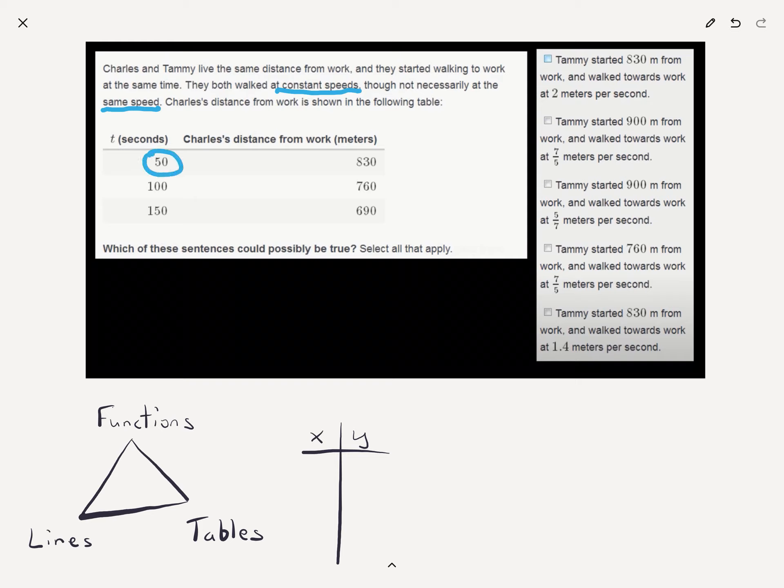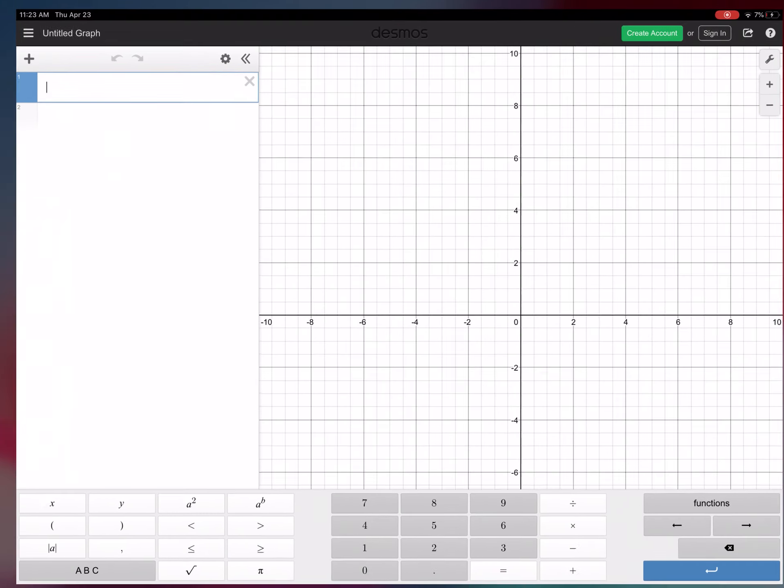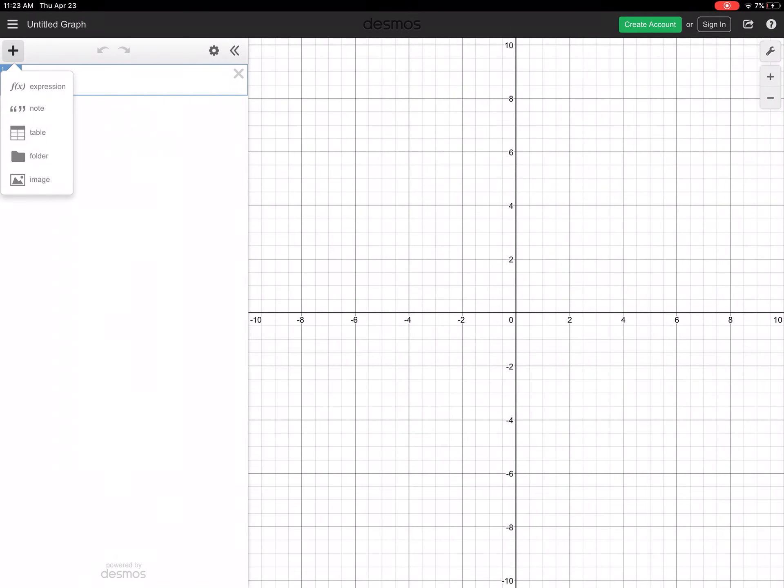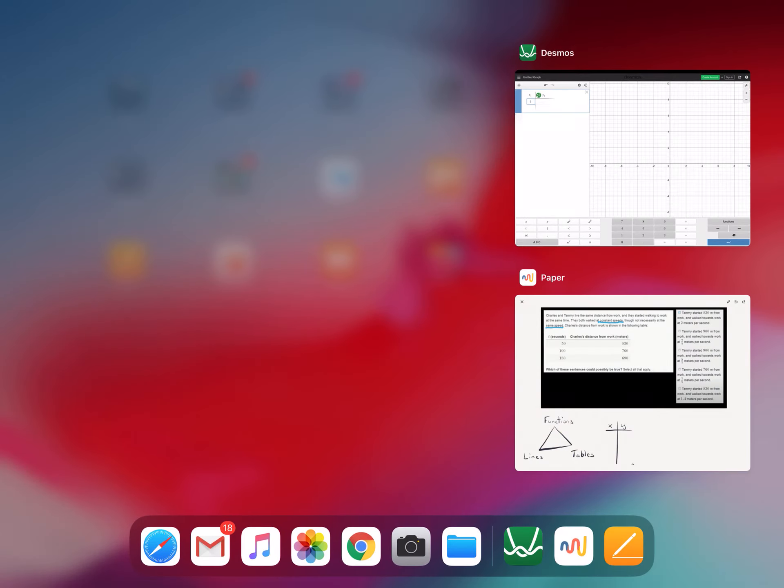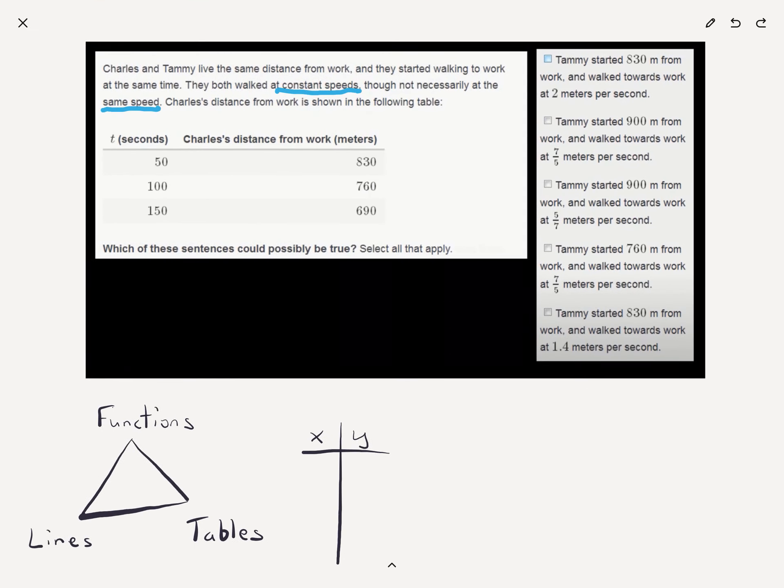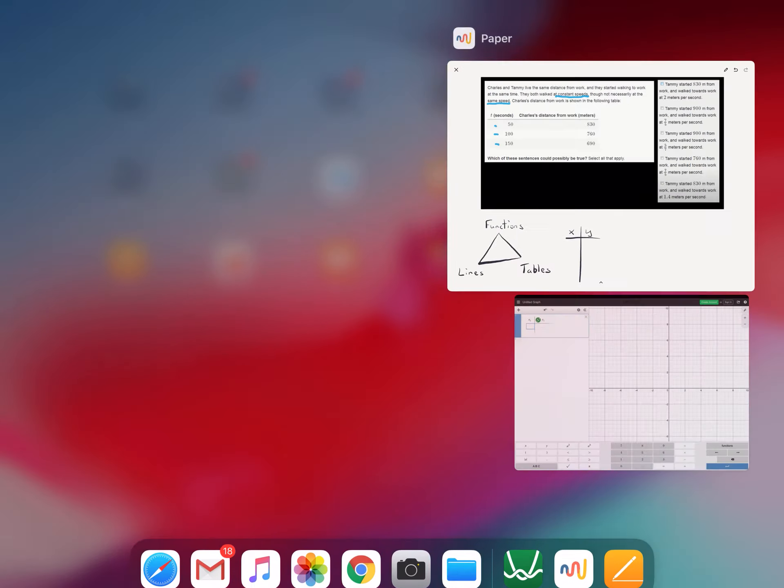So after 50 seconds of walking, Charles is 830 meters away from work. After 150 seconds of walking, Charles is 690 meters away from work. This seems pretty straightforward. In fact, it looks a lot like something we could put into a table. So I'm going to click over and go to Desmos because I know how to add a table, and I want to see the linear function that describes Charles' walk to work. All right? So in my X column, I'm going to have 50, 100, 150. I'll put those in.